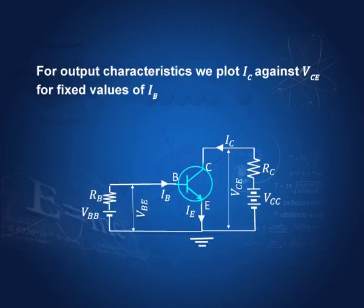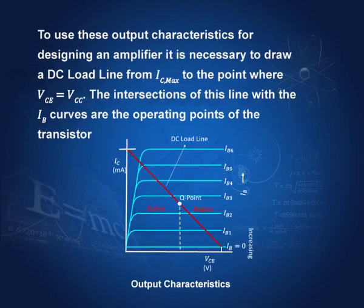For output characteristics, the circuit remains the same, but we now plot IC against VCE. IC is on one axis and VCE is on the other axis. For constant IB — constant base currents — this is the kind of graphs that we get. These are the curves for constant IB, and IB increases from IB1 to IB2 in this direction. For each curve, IB is constant, and we plot IC against VCE.